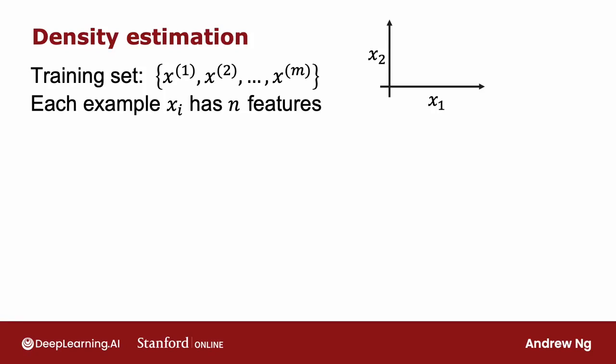Given this training set, what we would like to do is to carry out density estimation. And all that means is we will build a model or estimate the probability for p(x). What's the probability of any given feature vector?